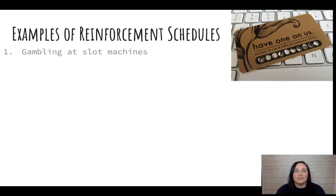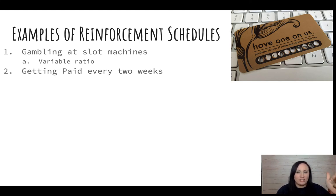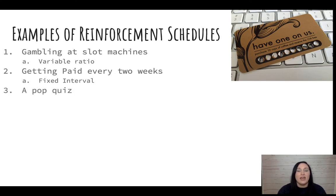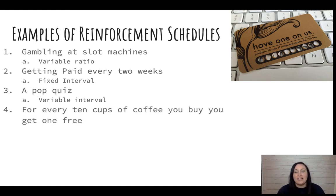Here are some practice questions. Gambling at slot machines is a variable ratio. Getting paid every two weeks — is it fixed or variable, and is it ratio (number of behaviors) or interval (time)? A pop quiz — is that variable or fixed, and is it about time or number of behaviors? It's variable and it's about time, how much you study. For every 10 cups of coffee you buy, you get one free — that's fixed ratio.